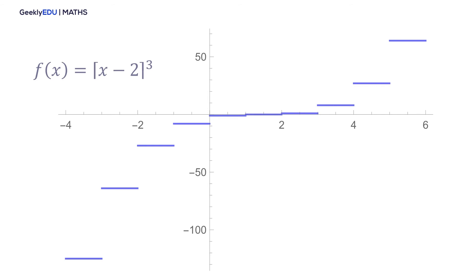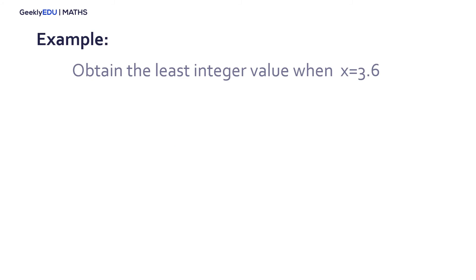Here is an example of the graph of the least integer function of (x minus 2) cubed, from x equal to −2 to 6. We have 10 steps because we have 10 integer numbers in that range. Let's solve one more example — we are going to find the least integer value using the same value of x equal to 3.6, so you can see the difference between the least integer function and the greatest integer function.